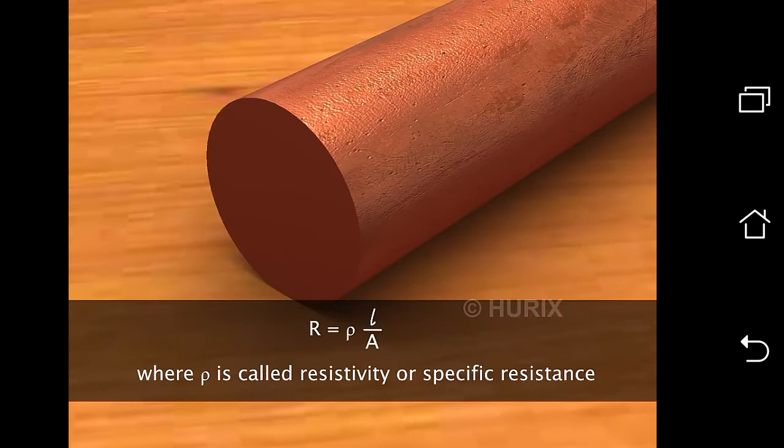So, R equals Rho L by A, where Rho is a constant called resistivity or specific resistance of the material of the wire.